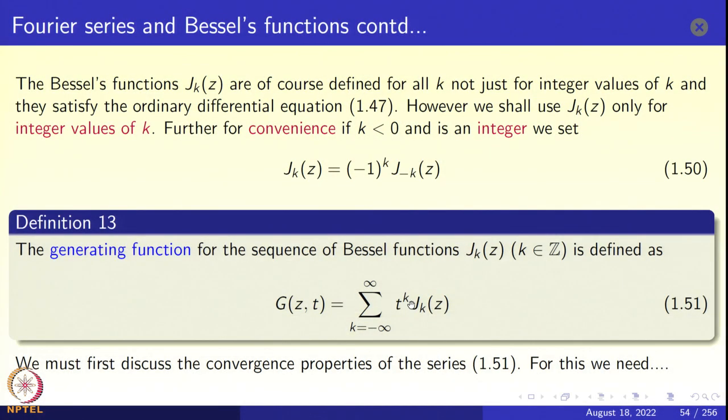This power series may converge or it may not converge. If it does not converge, you work with formal power series. Here we do not have a sequence — we have a two-sided, bilateral sequence: J_0, J_1, J_2, J_3, etc., and J_{-1}, J_{-2}, J_{-3}. So the generating function will also be a bilateral series 1.51: G(z,t) = summation K from minus infinity to infinity of t^K * J_K(z). This G(z,t) is called the generating function for the sequence of Bessel's functions J_K.